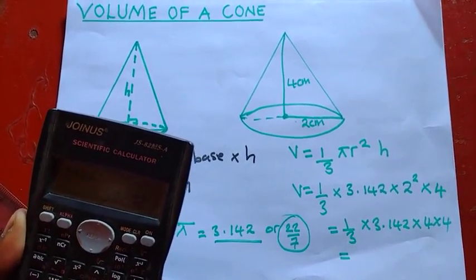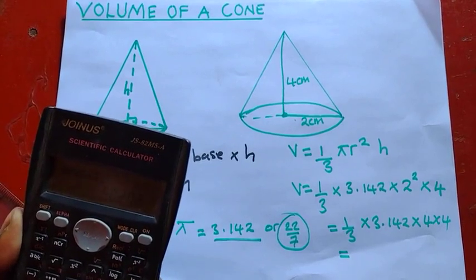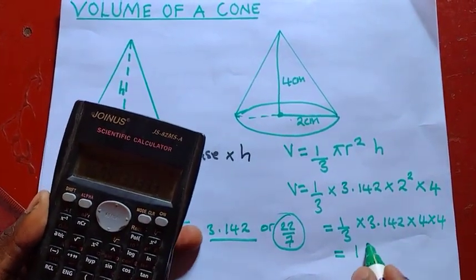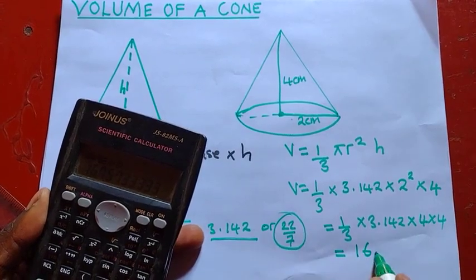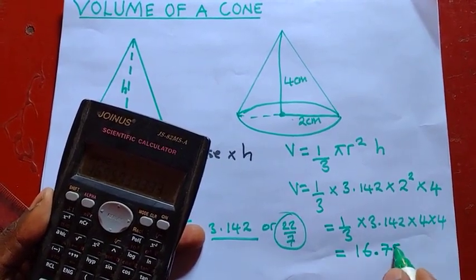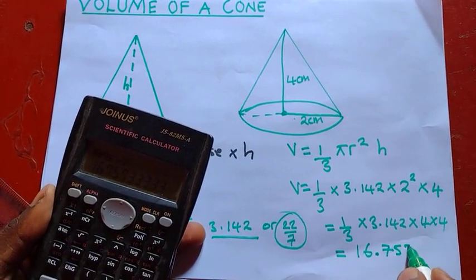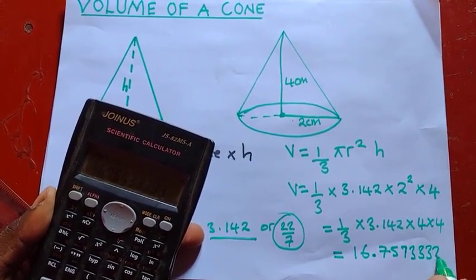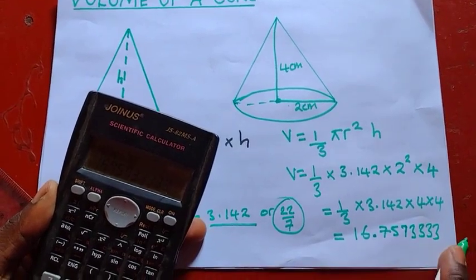So what I'll do is 3.142 times 4 times 4. Understand that it's 16, okay? So the value that I'll get, I'll divide with 3 here, okay? So it's giving me something like this, 16.757333, okay?